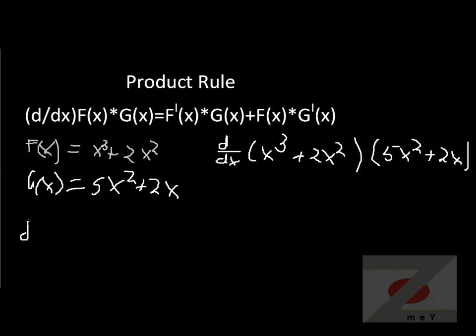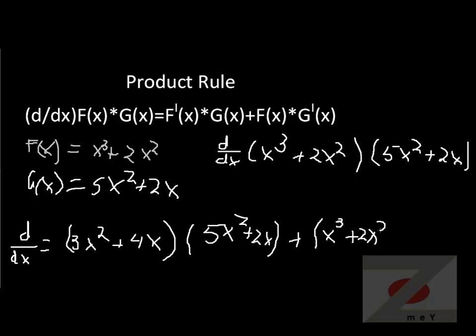Let's look at our equation. d/dx equals the derivative of the first one. We have to perform power rule for both functions. Derivative of the first is 3x squared plus 4x. You should review how I did power rule here. Times the second one, 5x squared plus 2x. Then we add the first one, so x cubed plus 2x squared times derivative of the second. Derivative of the second is, using power rule again, 10x plus 2.